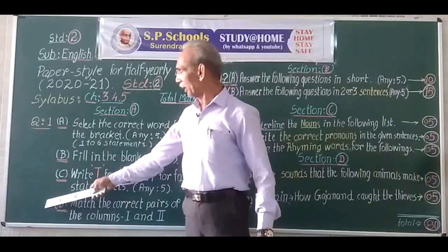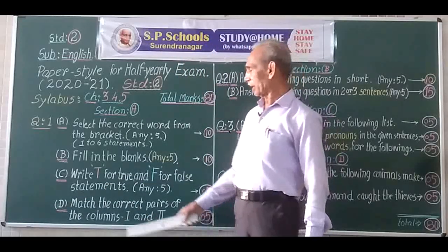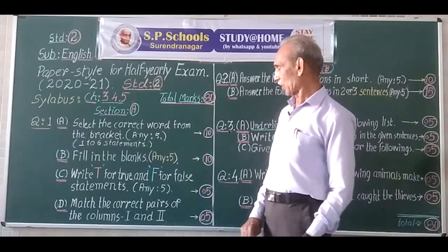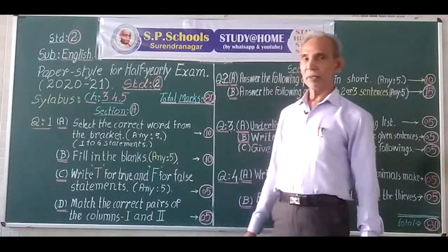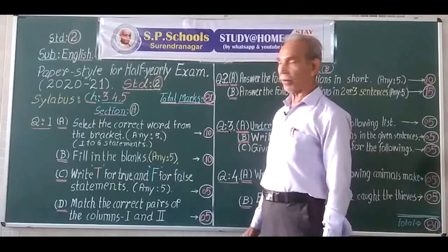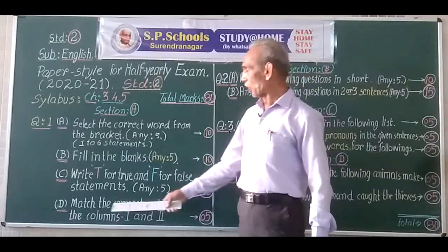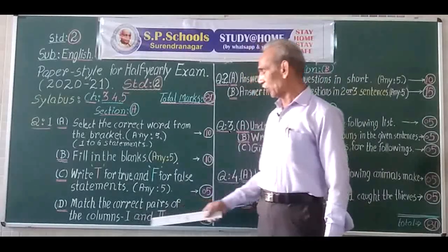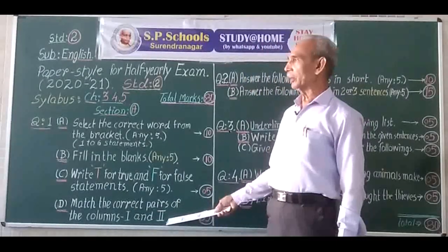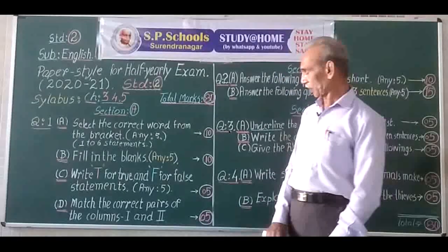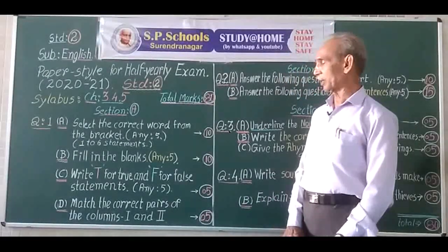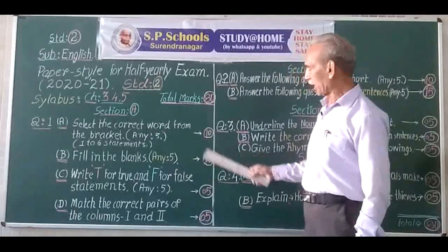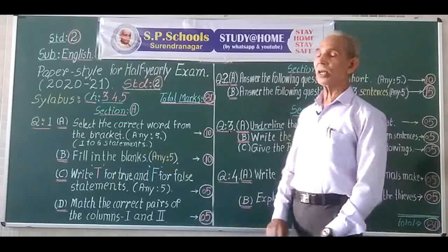Question 1D will have two columns given to you, each with five items. You have to match the correct pairs from column 1 to the pairs given in column 2. It carries 5 marks. In this way, Section A carries 30 marks in total.